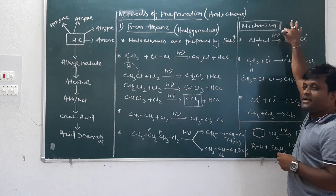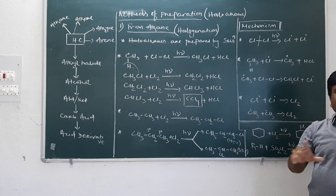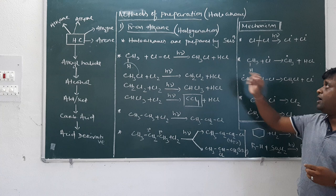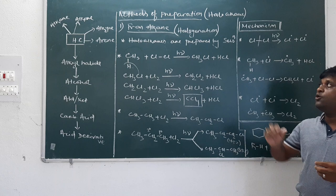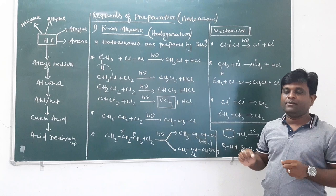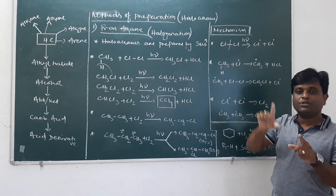Now we come to the mechanism. This reaction is carried out in three steps. First step: free radicals are generated. The halogen is chlorine, so first chlorine dissociates. Dissociation is of two types: one is homolytic and another is heterolytic.